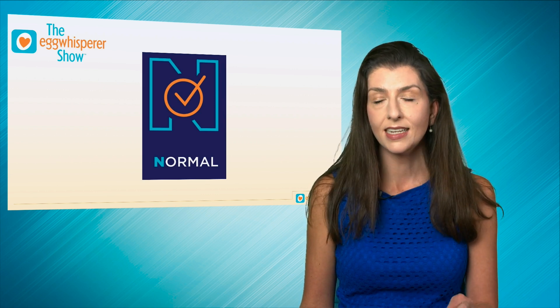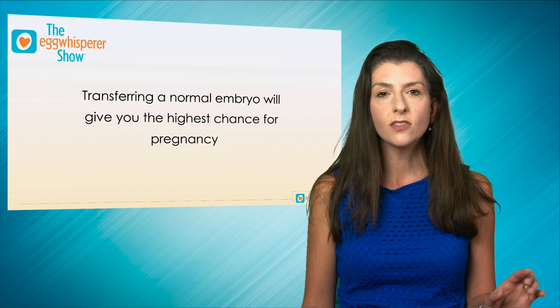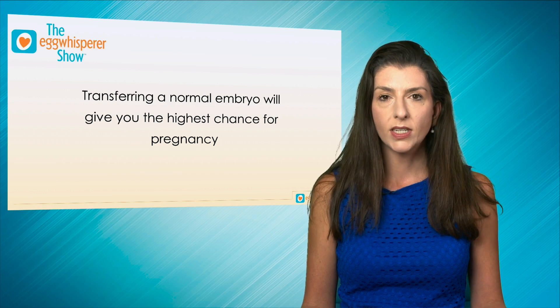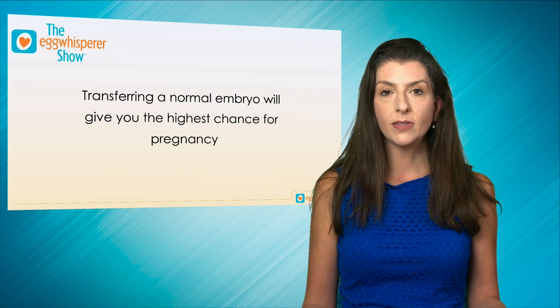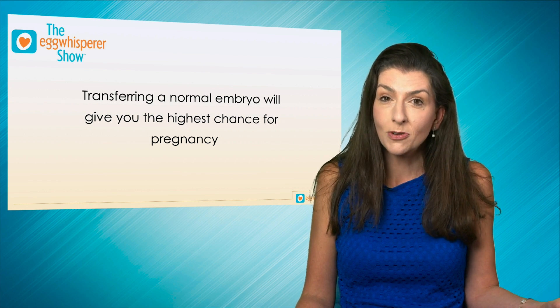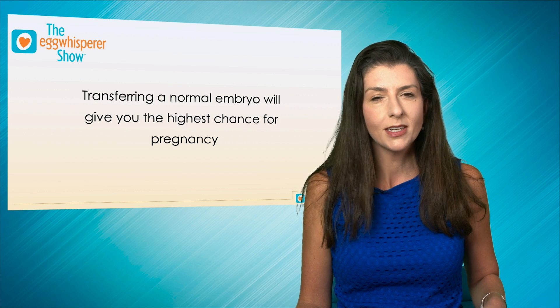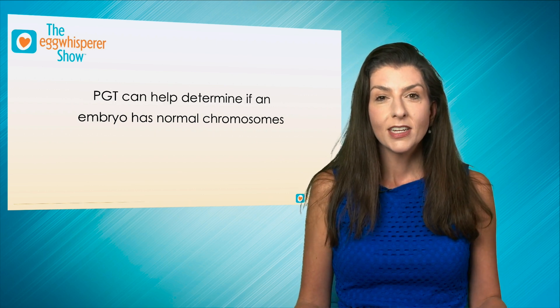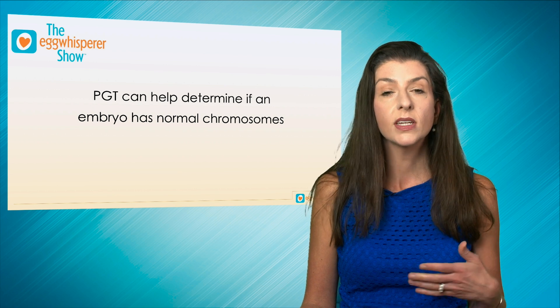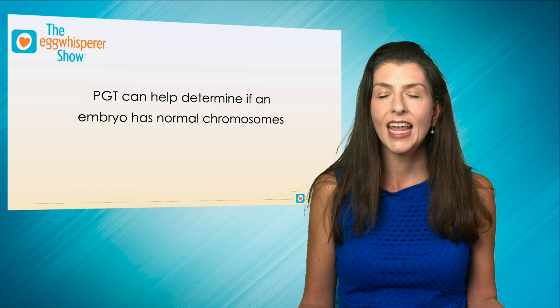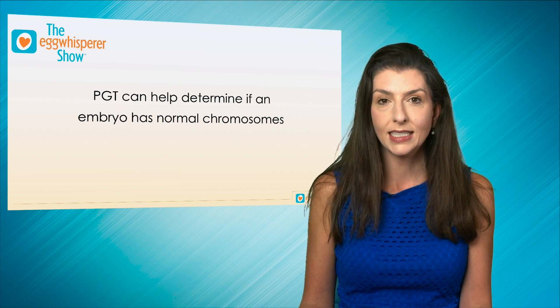The N is for Normal — which embryo is normal. It's very important to point out that PGT-A can only tell us which embryo has normal chromosomes. It can't tell you if your baby is going to be 'normal' in every sense. PGT can help determine only if an embryo has normal chromosomes, but not rule out everything — like ADD, ADHD, autism, or other birth defects. We all have our own quirks.